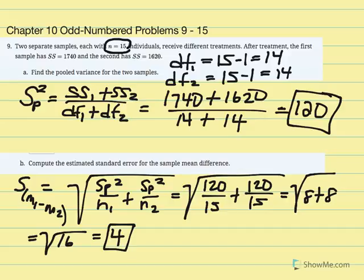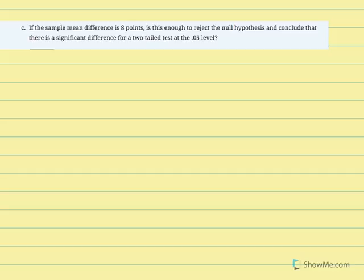Now we calculate our t-statistic and draw conclusions regarding the null. Part C says: if the sample mean difference is equal to 8 points, is this enough to reject the null hypothesis and conclude there's a significant difference for a two-tailed test at the 0.05 level? We're conducting a t-test for independent sample means — two different samples exposed to two different treatments — and we want to determine if the difference is due to treatment and not simply sampling error or chance.